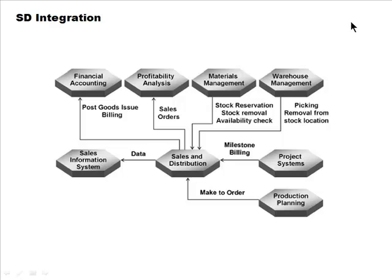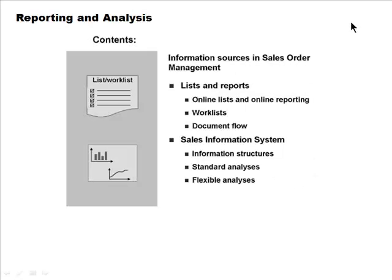Reporting and analysis in sales order management includes many information sources, lists, and reports. Document flow lets you see all related documents. Online lists let you pull up documents instantly — for example, a list of sales orders by a particular customer. Work lists are part of the workflow system and will be discussed shortly. The sales information system provides more detailed analysis.